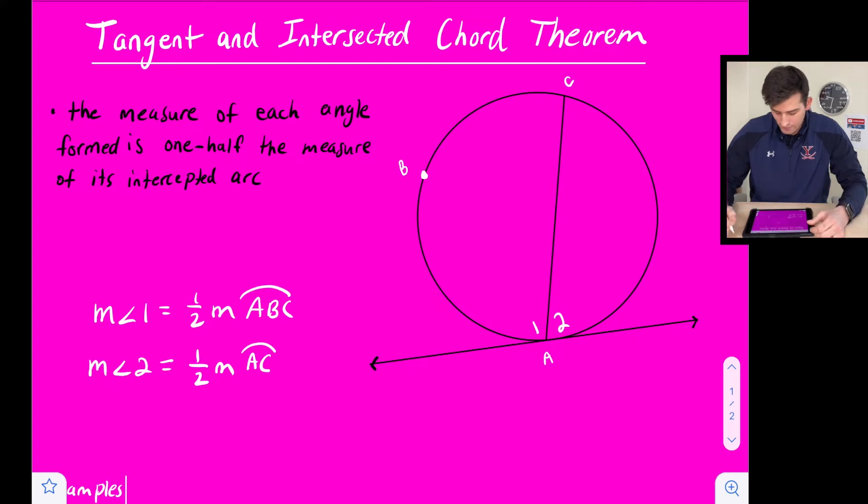So on our diagram over here on the right we have angle one and angle two. Our tangent here is this line at the bottom and it intersects our circle at point A and we have a chord which is chord AC.